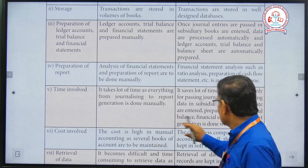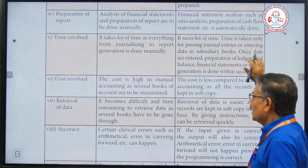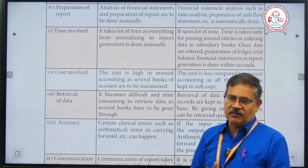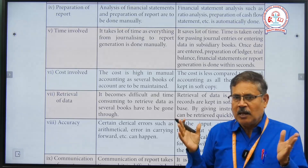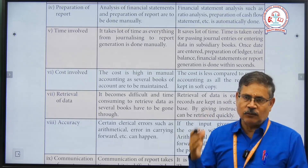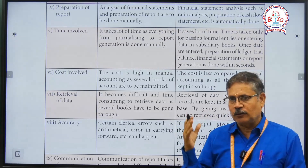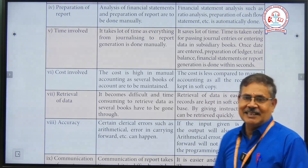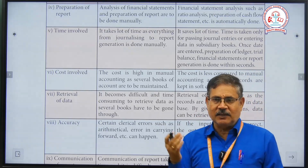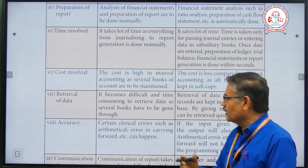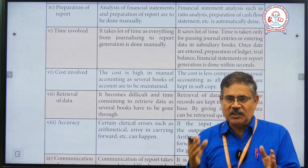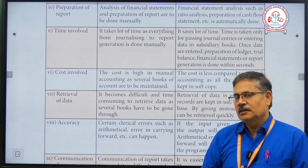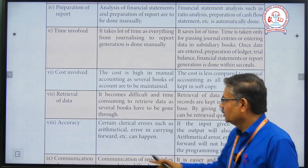The next point is cost involved. The cost is very high in the manual accounting system because we use bulky books and prepare bulky accounting statements, incurring many expenses. But in the computerized system, the cost is less by comparison, because all records are kept as soft copies — you can use a pen drive or a memory card.